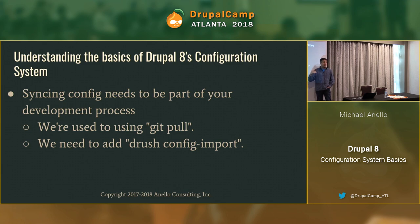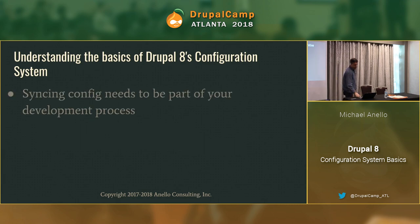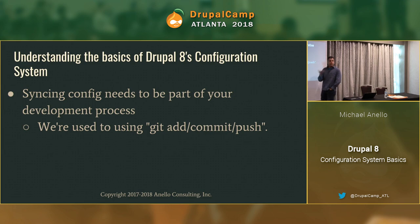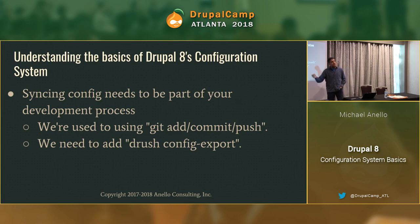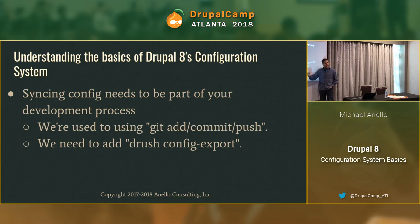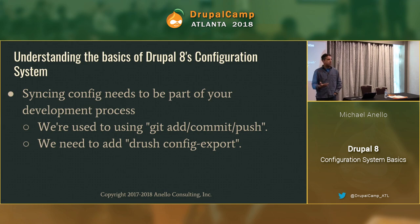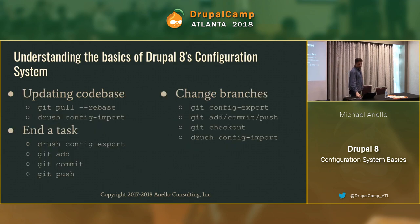You don't always have to do a drush config import, but at the very least, when you do your pull and get new commits, take a quick look at them and see if any include configuration — if they do, import them. Similarly, when you're done with a task and ready to do git add, commit, push, if your change involves a configuration change, you have to run config export first and get that configuration change into the commit. Our old friends git add, commit, push, and git pull now have new sidekicks: config import and config export.